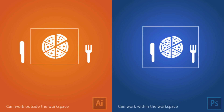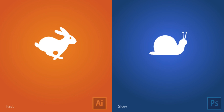In the work area, Illustrator lets you work outside of the canvas. You can take objects off the artboard and only work within the area you want. In Photoshop you can't do that — everything has to stay within the workspace. You can't drag any objects or graphics outside of that area, which is a bit of a letdown.